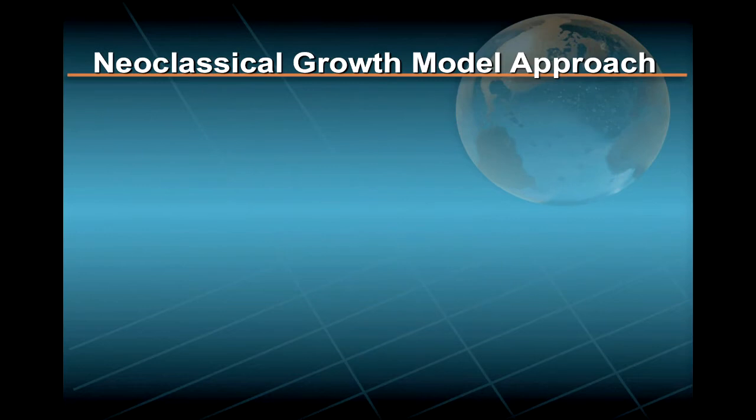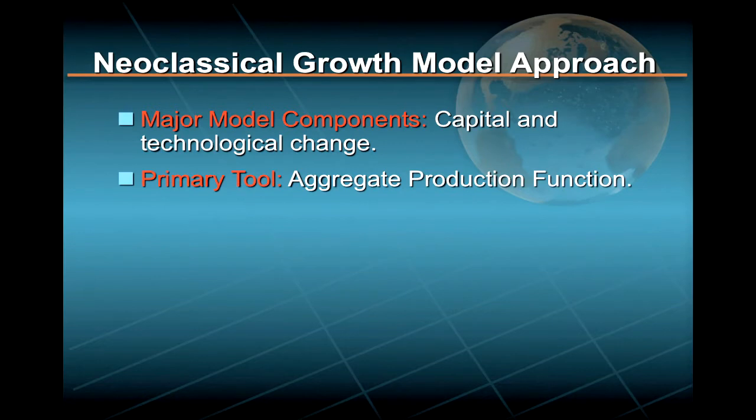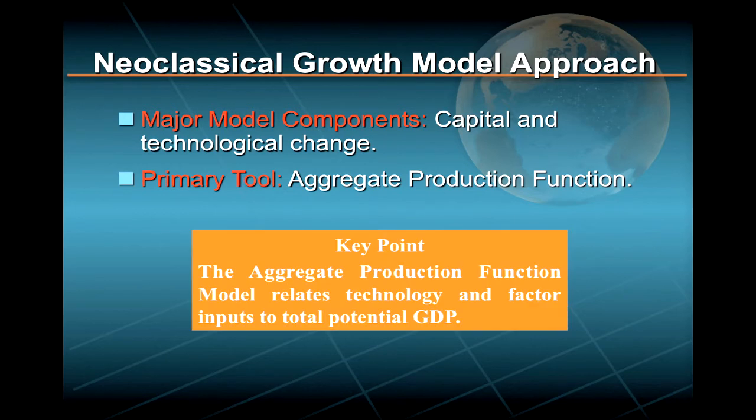The major new ingredients in Solow's neoclassical growth model are capital and technological change. The approach of this growth model is to use a tool known as the Aggregate Production Function, or APF, which relates technology and inputs like capital and labor to total potential GDP.